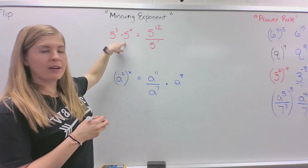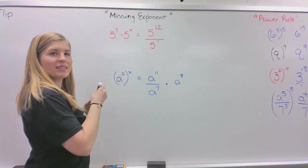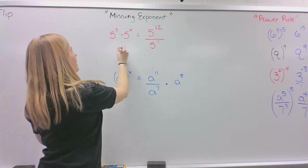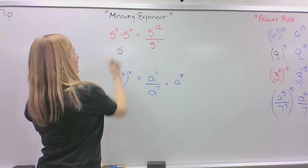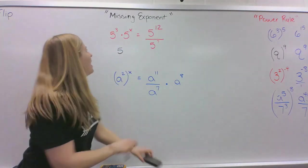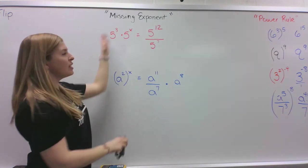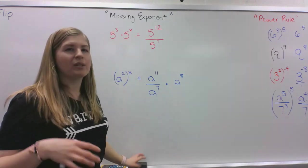When we multiply, we are adding our exponents. Make sure they have a like base. So since they have like bases, what we would do is we'd be adding those exponents.